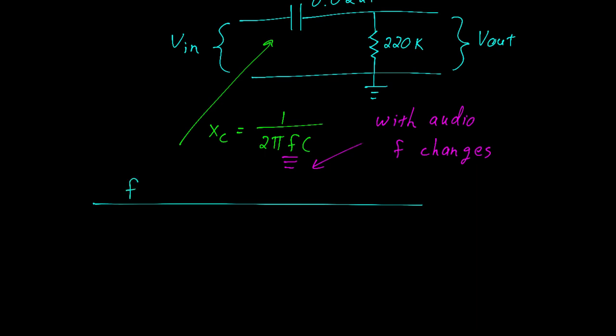We'll start by making a table. We have the frequency in hertz, the capacitive reactance, and then the phasor output voltage. For sake of discussion we'll pick a few values. We'll start with 1, 3, and 10 hertz.